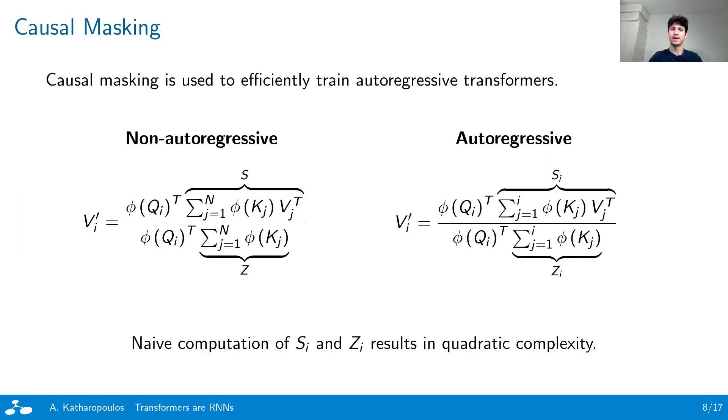However, both S_i and Z_i can be computed as cumulative sums, namely with constant time given the previous values. This allows us to recover the linear complexity for the autoregressive case.